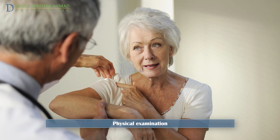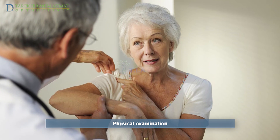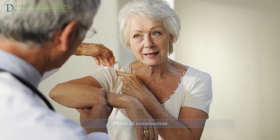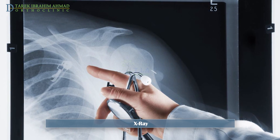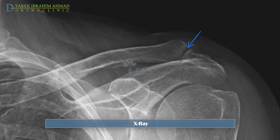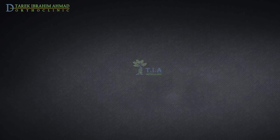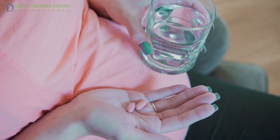To diagnose AC osteoarthritis, your doctor will ask about your symptoms and medical history. The shoulder will be examined for signs of previous injury, tenderness, pain points, and muscle weakness, and the doctor will observe differences between the affected and unaffected shoulder. Shoulder X-rays can show narrowing of the AC joint and bone spurs. Notably, some people may have significant X-ray findings but no pain, while others may have few X-ray signs but significant pain.